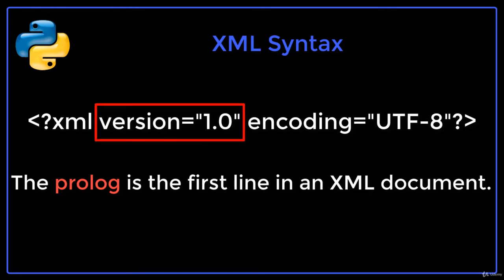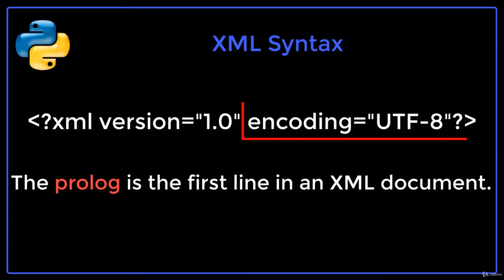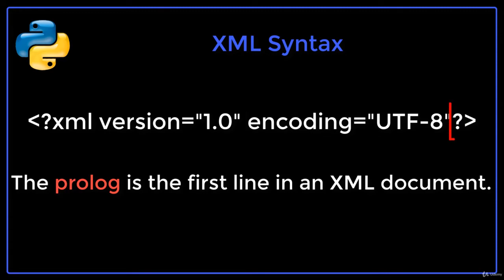Then we use the version attribute and give it a value of 1.0. Note that the 1.0 goes inside of quotes, and there is an equal sign between the attribute and the value. The character encoding for the XML document is set in a similar manner. In this example, the encoding is set to UTF-8. We end the prologue with a question mark and a closing angular bracket.